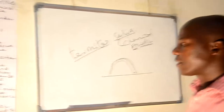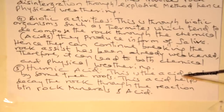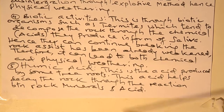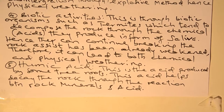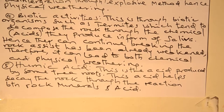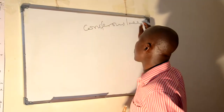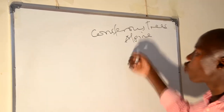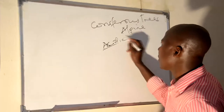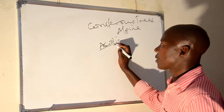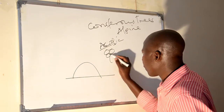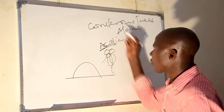Another process is humic acid. This is the acid produced by some tree roots. This acid helps to decay the rock through the reaction between the rock minerals and the acid. There are some plants which produce acidic substances — for instance, coniferous trees. These are trees found in alpine regions, and they drop acidic chemicals onto the surface.